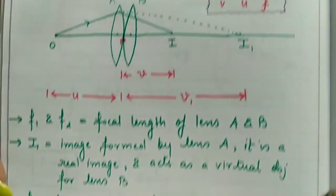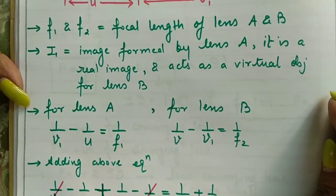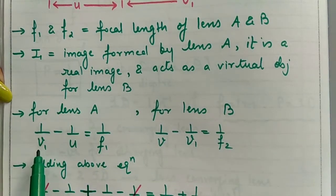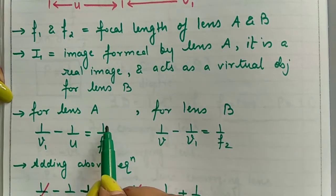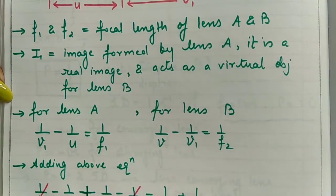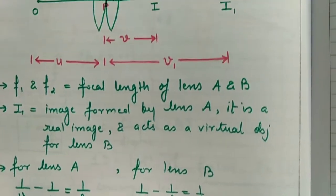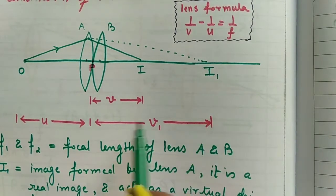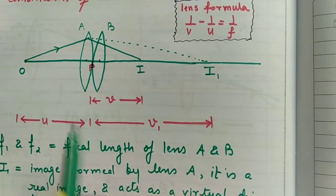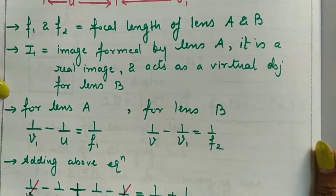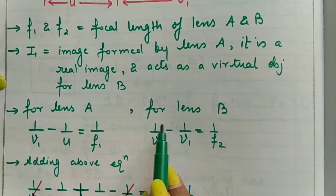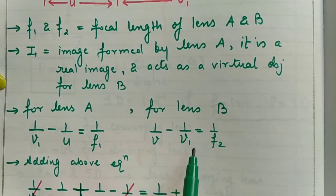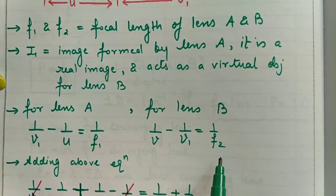Now by using the lens formula, I'll write the equations for lens A and for lens B. For lens A, this is 1 upon image distance minus 1 upon object distance equals 1 upon focal length. For lens A, image distance is V1, so I can write this equation.